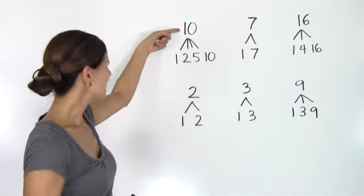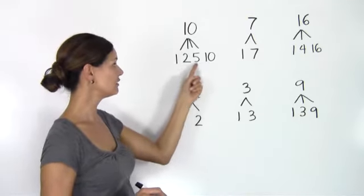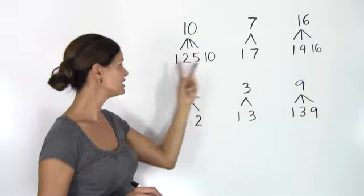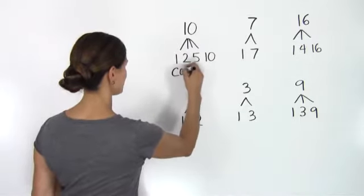10, for example. If I look at the factors of 10, I see I've got 1, 2, 5, and 10. So I have more than two factors, making 10 a composite number.